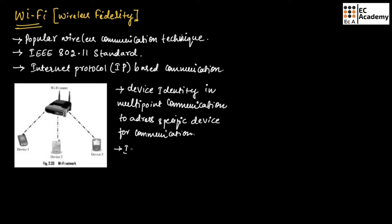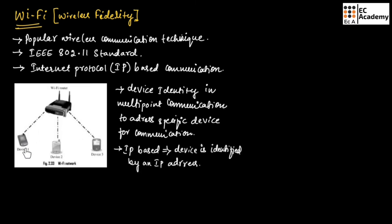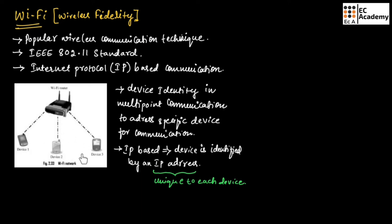In IP based communication, each device is identified by an IP address. Each device communicating with the Wi-Fi router will be identified by its internet protocol or IP address. Since this IP address is unique to each device present in a network, it is easy to identify the particular device for communication.